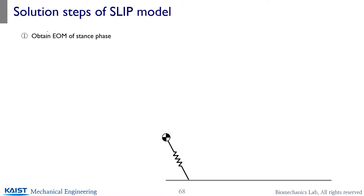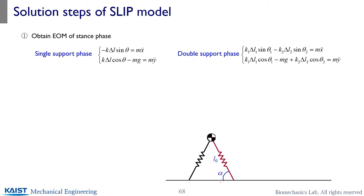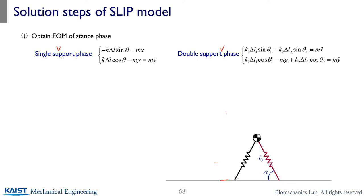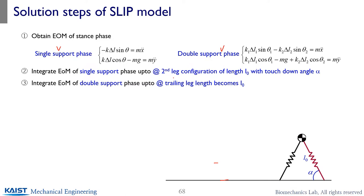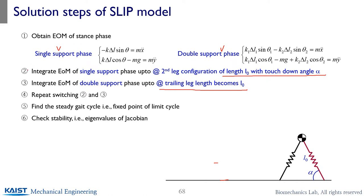To review the solution steps for the SLIP model: we have equations of motion for single and double support phases separately. Alpha and L0 are predefined. You switch back and forth between single and double support depending on the leg length — switching to double support when the predefined touchdown angle is reached, and back to single support when the trailing leg reaches its natural length. Repeat this until you find the repeated solution — the fixed point — then check stability.